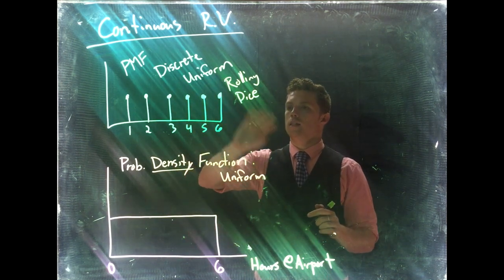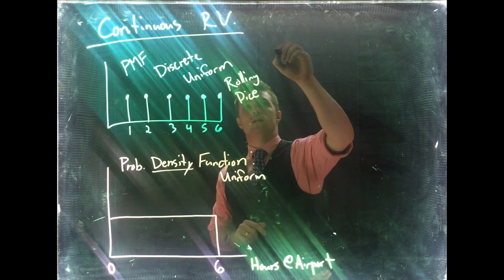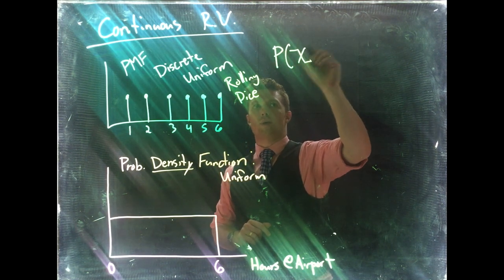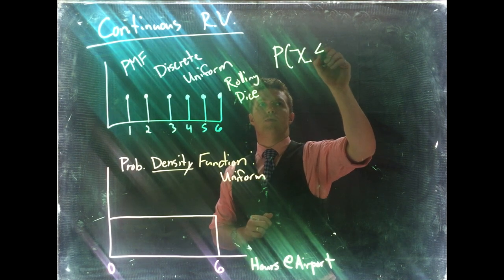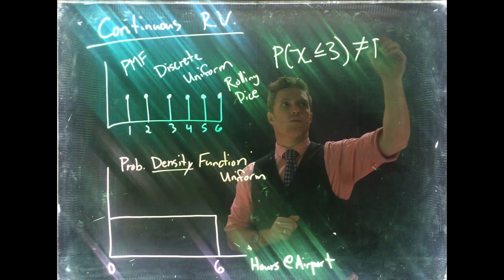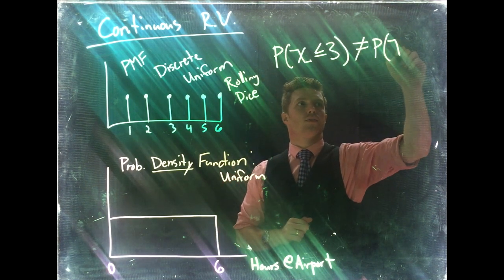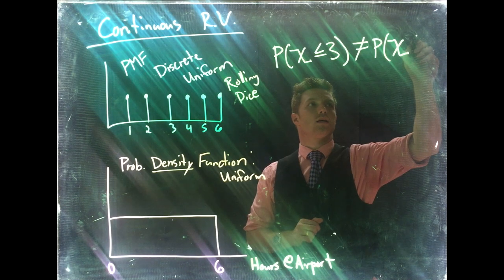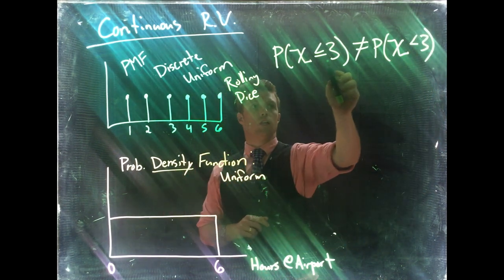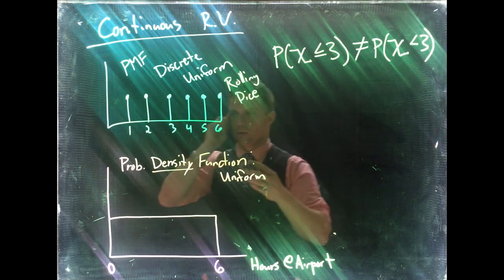Okay so this brings up an interesting concept. So over here when we did our discrete random variables, this was a true statement. So the probability of the random variable, we'll say being less than or equal to three, is not the same thing as saying the probability of our random variable being less than three. Okay so one included three, one didn't include three.